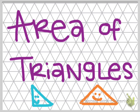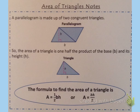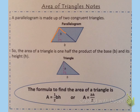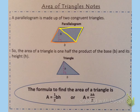Area of Triangles. A parallelogram is made up of two congruent triangles. For instance, if we look at this parallelogram, I can see one triangle here on the bottom, and I can see another triangle here, and they are both the same size and shape. They are congruent to one another.